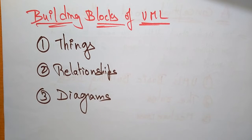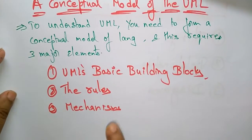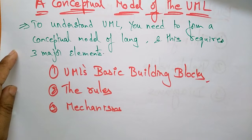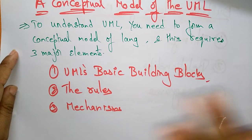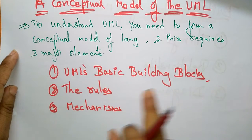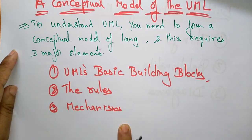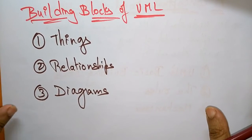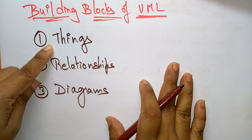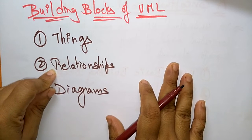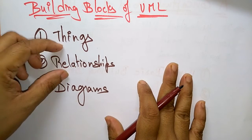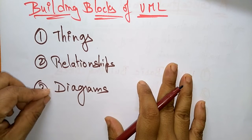These three building blocks are the major elements used to construct and understand the UML language — that is, building blocks, rules, and mechanisms. Coming to the building blocks, they are of three types: things, relationships, and diagrams. If you combine things and relationships you will get the diagrams.